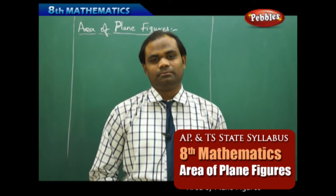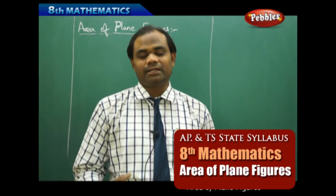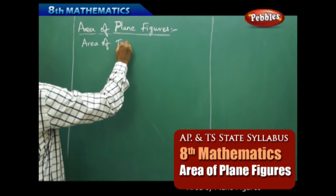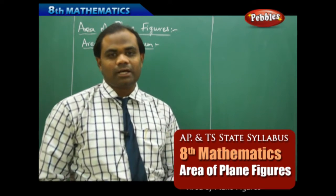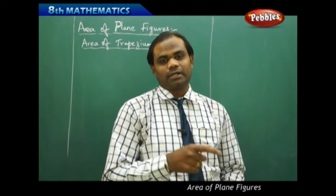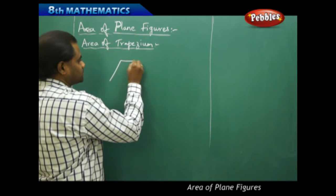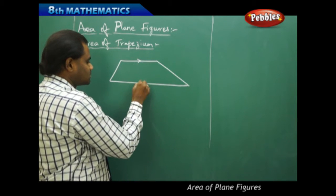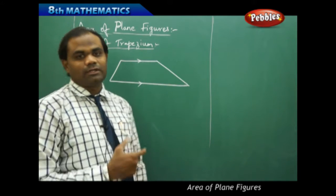Initially we'll start with the area of a trapezium, but before this we want to recap what exactly a trapezium is. A trapezium is a four-sided closed figure where one pair of sides is parallel. So one pair of sides is parallel, then that kind of four-sided closed figure or quadrilateral is called a trapezium.